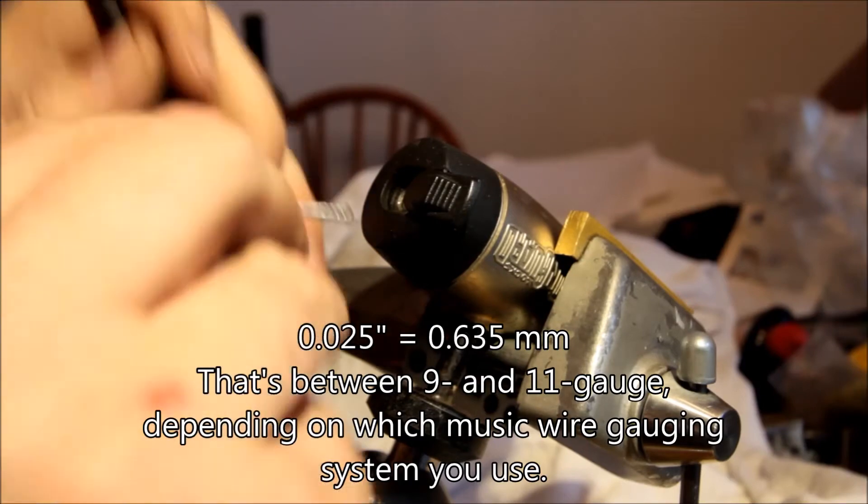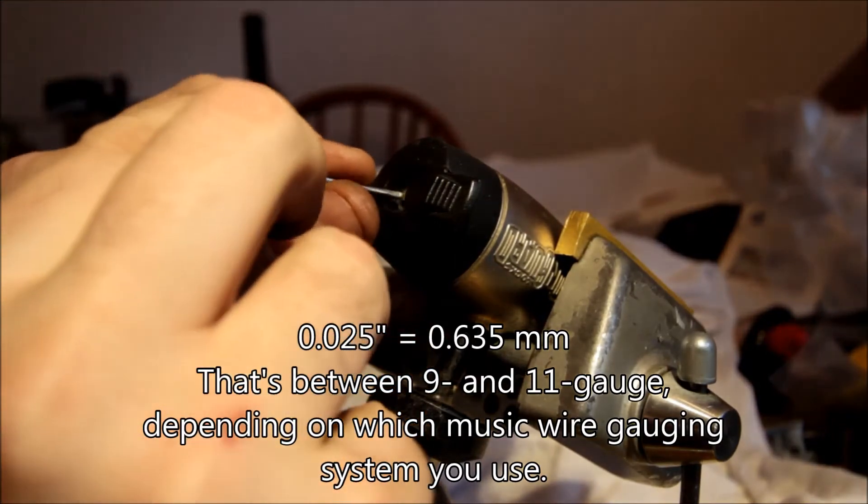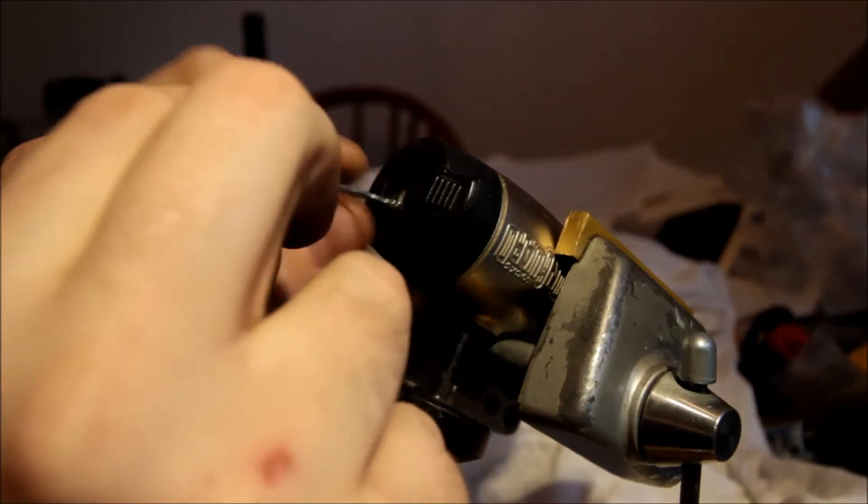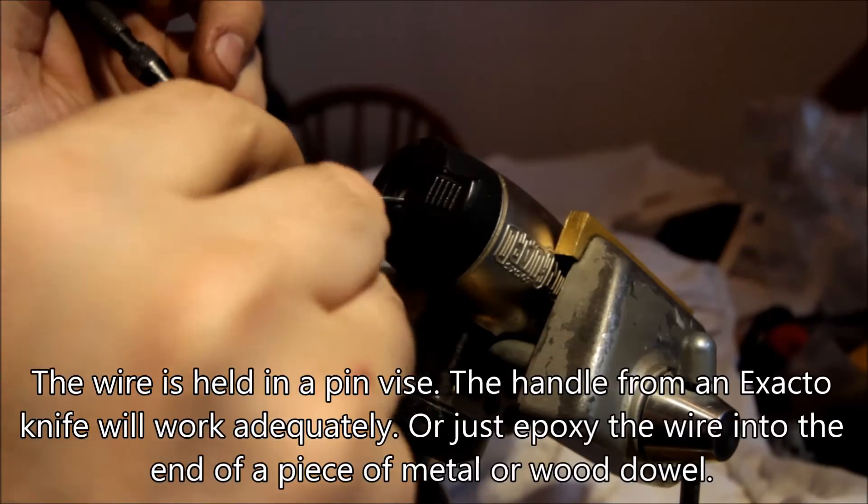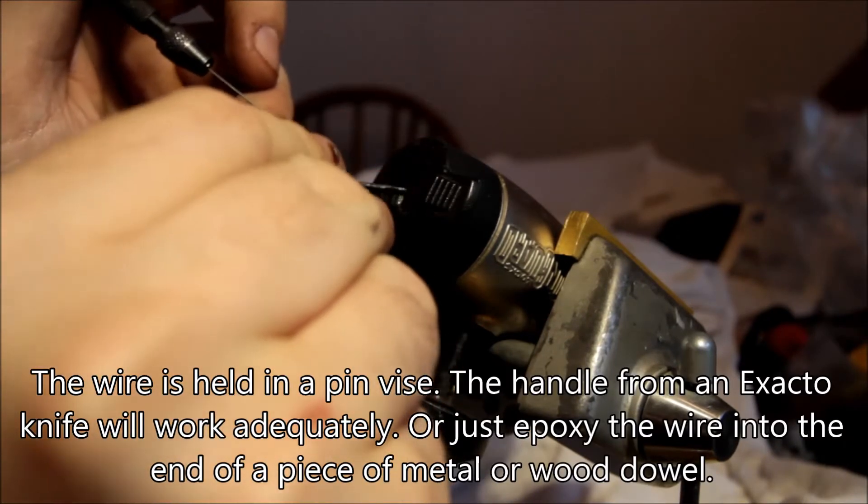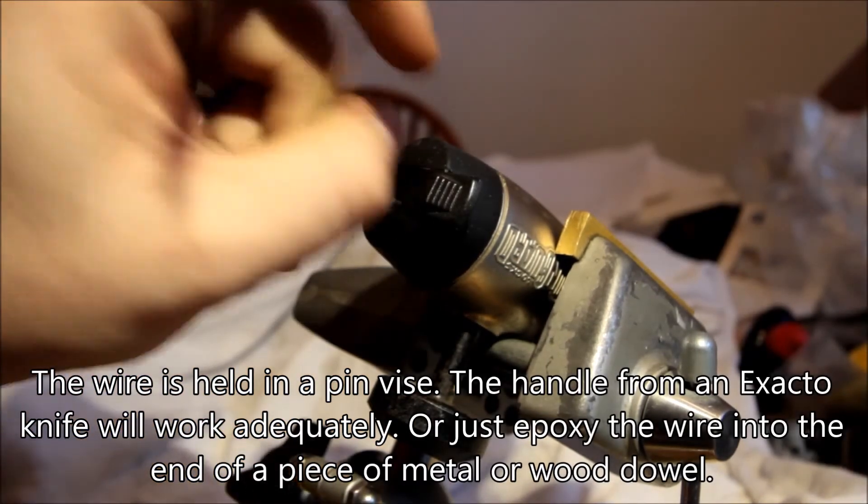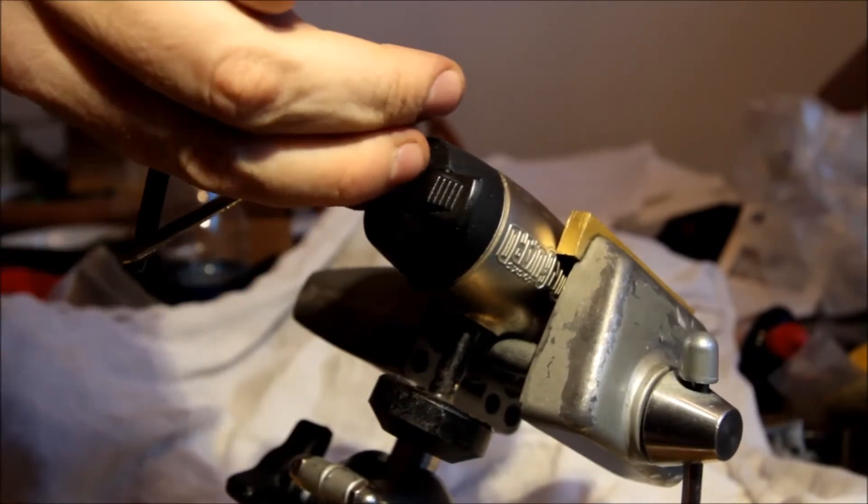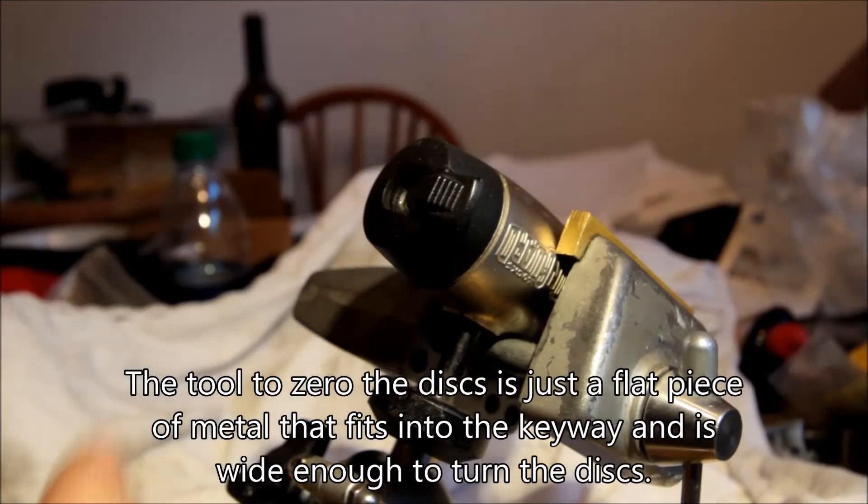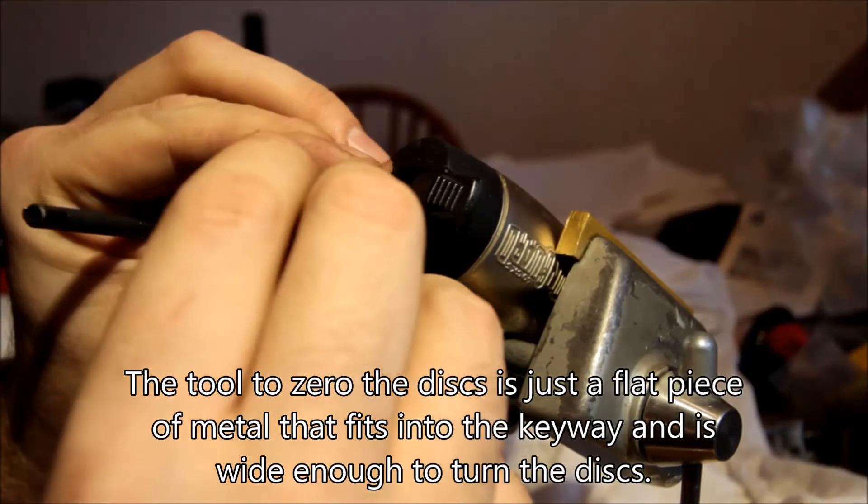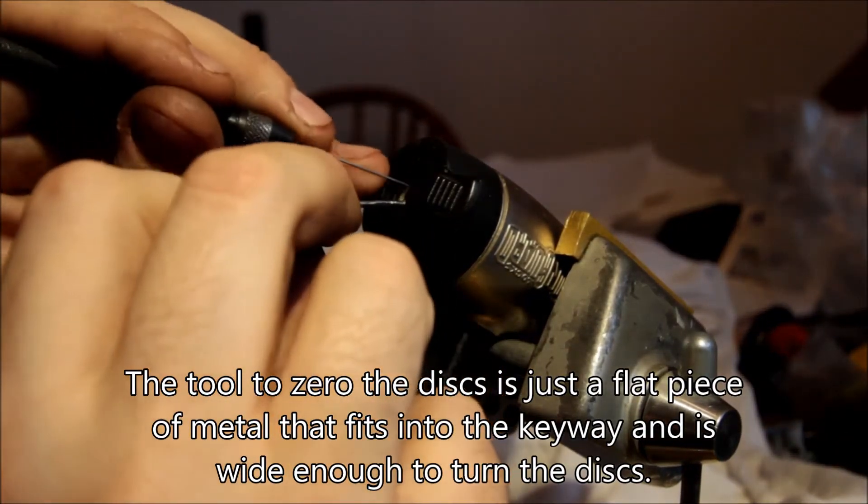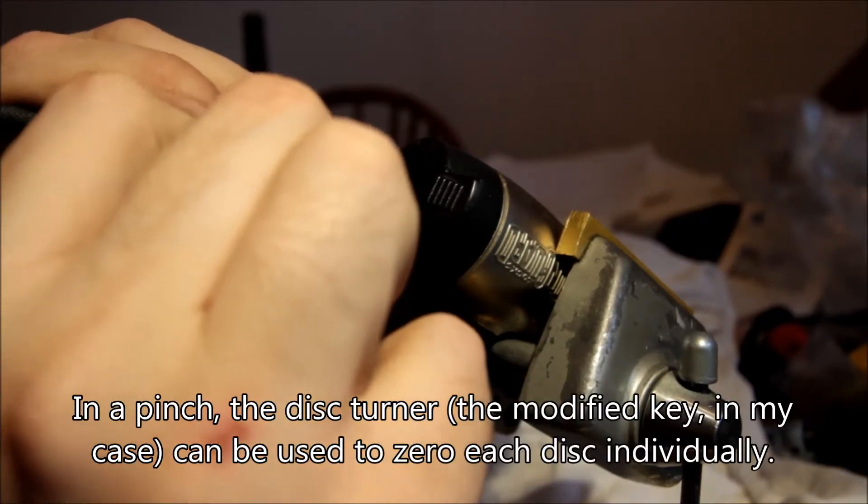This is a piece of I think 025 or 020 music wire. And what we will do is take disk 1 and turn it around. Actually, take it back. We will zero the disks. That will make my life a lot easier. Okay.